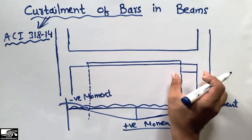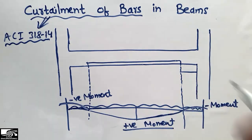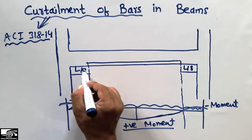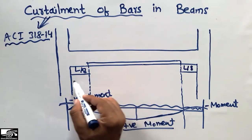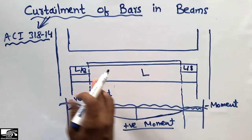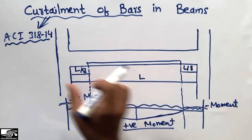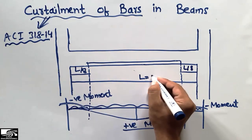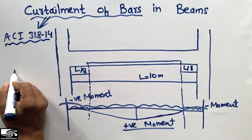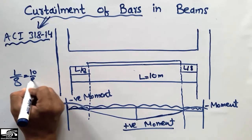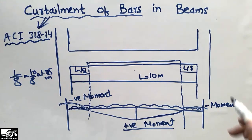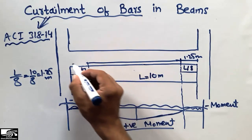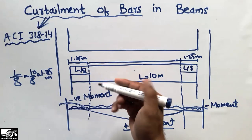The distance from each column at which the bars are curtailed should be L/8, according to ACI 318-14. If the total beam length is L, then the curtailment distance from both supports is L/8. For example, if the beam length is 10 meters, then L/8 equals 10/8, which equals 1.25 meters. So I will place bottom reinforcement starting from 1.25 meters from each support.